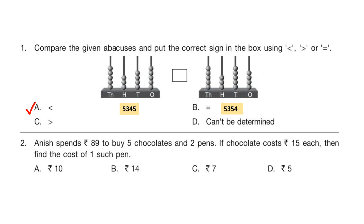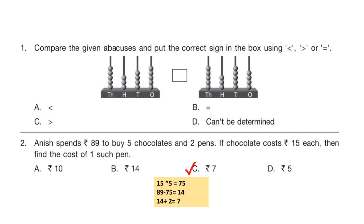Question 2: Anish spends Rs. 89 to buy 5 chocolates and 2 pens. If a chocolate costs Rs. 15 each, then find the cost of one such pen. You can pause the video and calculate your answer. The correct answer is option C. Solution is shown below.